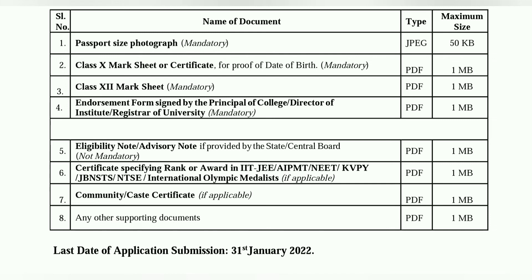The sixth document is a certificate specifying rank and award for eligibility. There are 4 to 5 categories: IIT JEE, AIPMT, KVPY, NTSE, International Olympiad, and Medalist. These are rank holders who can apply. As proof of whichever exam you applied for, upload the certificate or rank card in PDF format, under 1MB in size.